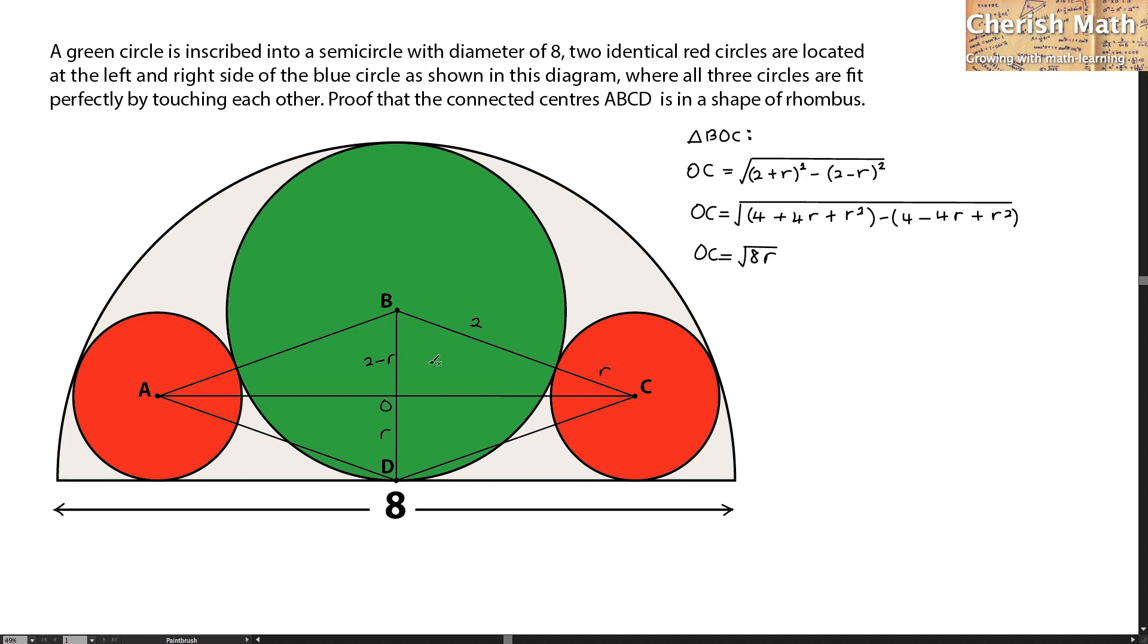Let me label the length of OC in the diagram here. This is the length, and this is the right angle. I'm going to extend line BC, and this is how it looks. I'm going to make another line connecting from center C of the red circle to the base.